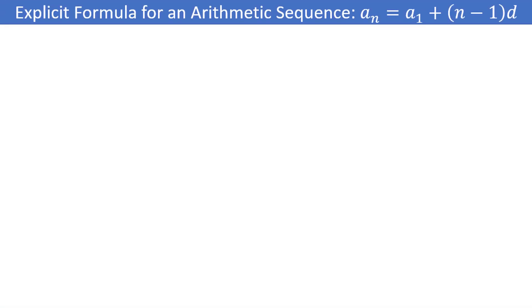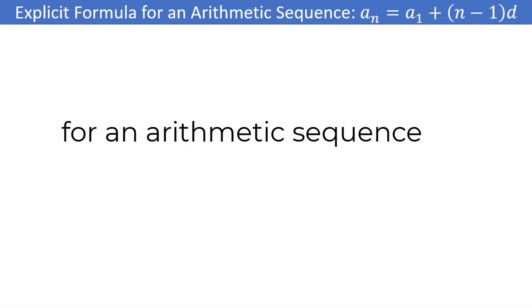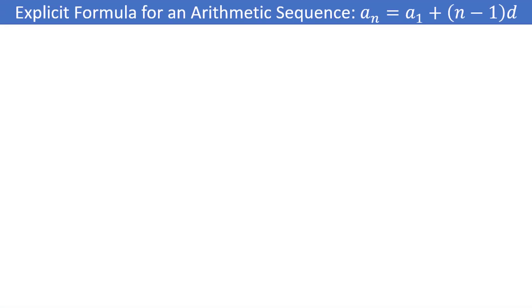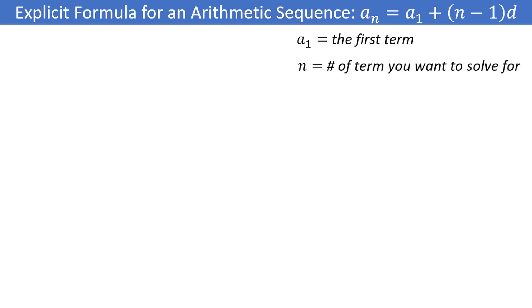In general, the explicit formula for an arithmetic sequence is a sub n is equal to a sub 1 plus (n minus 1) times d, where a sub 1 is the first term in the sequence, n is the number of the term you want to solve for, and d is the common difference between terms.